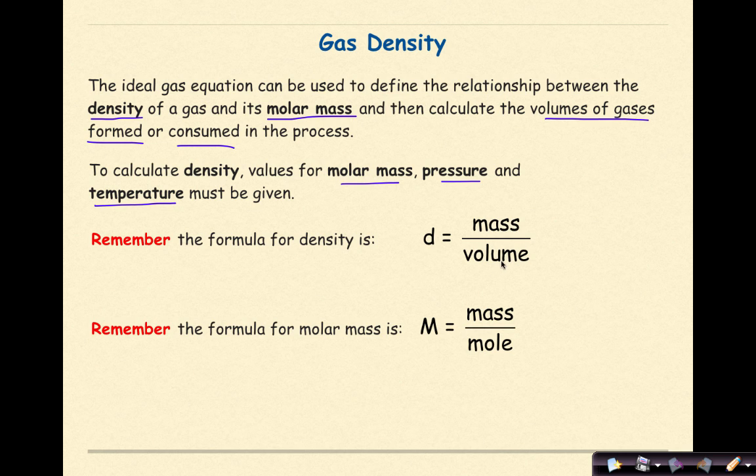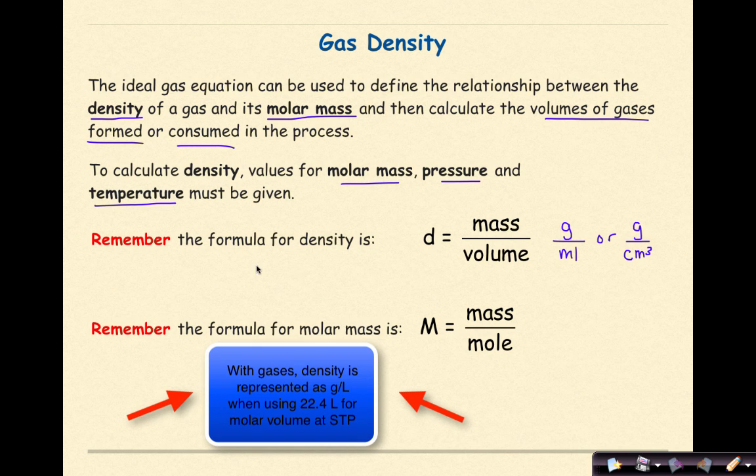When you do your units for this, mass is going to be represented as grams, and volume can be represented in one of two ways. If we're dealing with a liquid, we'll label it as milliliters, or if we're dealing with a solid, we will do grams over centimeters cubed, because remember, one milliliter is equivalent to one centimeter cubed.